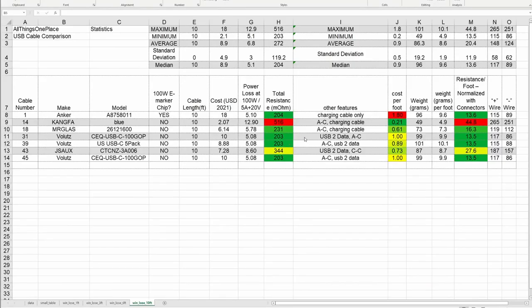Alright, so first things first, we have the 10-foot cables here. And we noticed that the Anker 10-foot cable from previous round did pretty good. The Volutes cables are basically all in the same category. There's a JSAUX cable that didn't do as good. It's a USB-C to C cable and quite a bit cheaper, but it's also quite a bit worse. And then there's one cable that was really cheap, and it's terrible. So this Kang-Fa Blue cable did really bad. So that's definitely one to avoid.